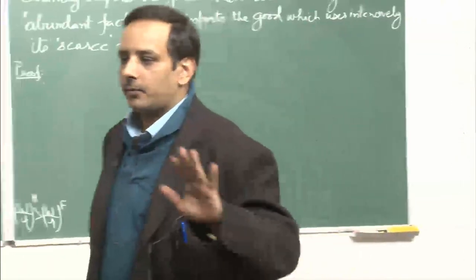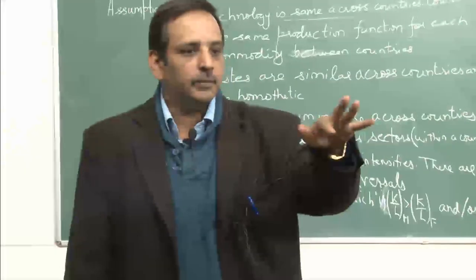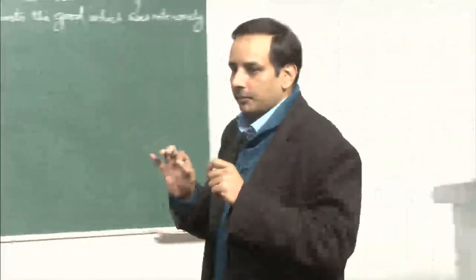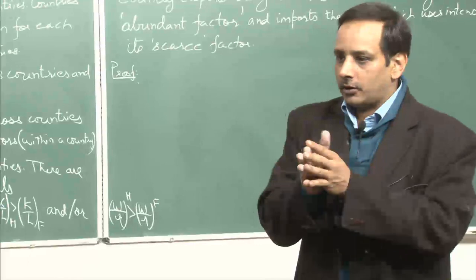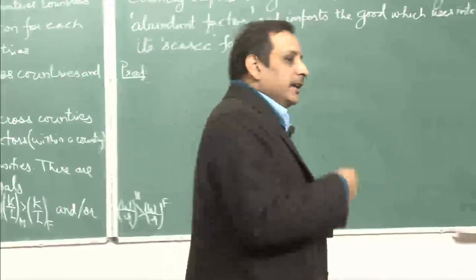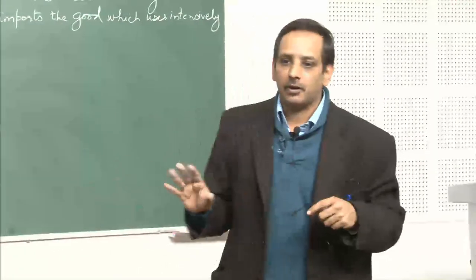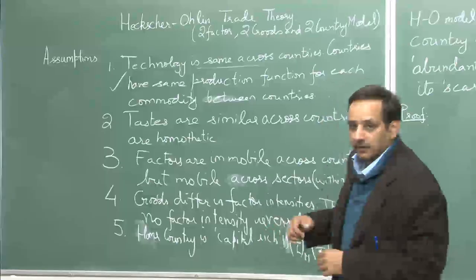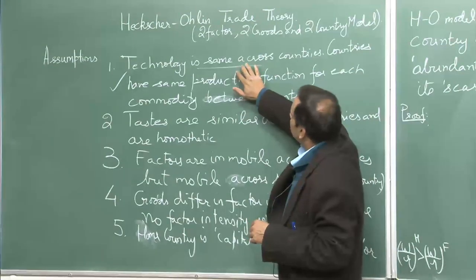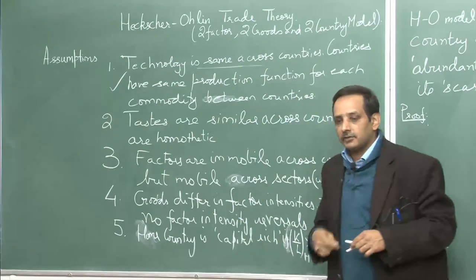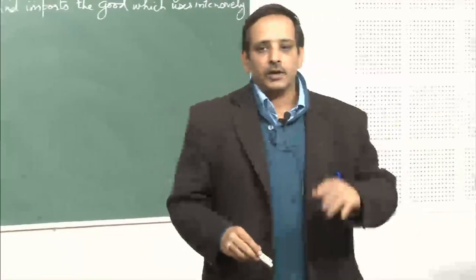Heckscher-Ohlin cannot explain trade in products which have similar factor intensities. The empirical facts are: most trade takes place among industrialized countries; it takes place between countries which have common borders or smaller distance between them; and third, most trade is intra-industry trade. Heckscher-Ohlin cannot fully explain all three empirical facts. But the latest research shows that if you relax the assumption that technology is same across countries, then you can explain some proportion of international trade.